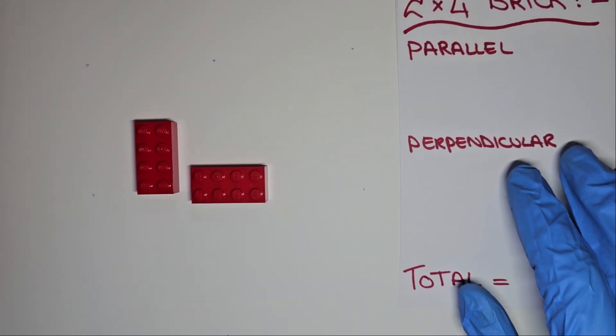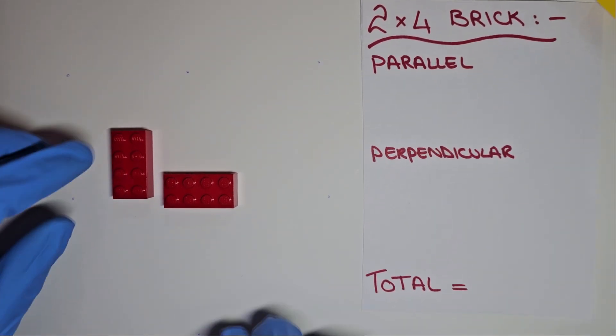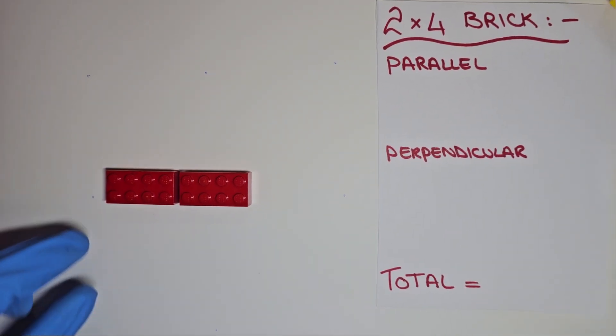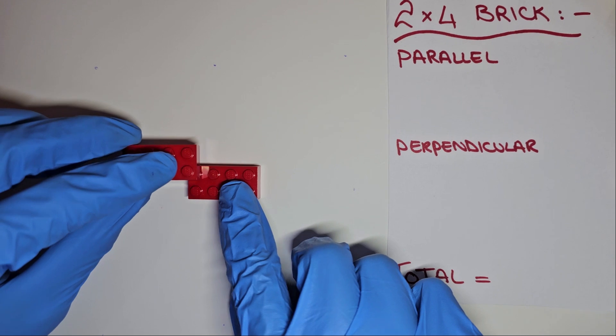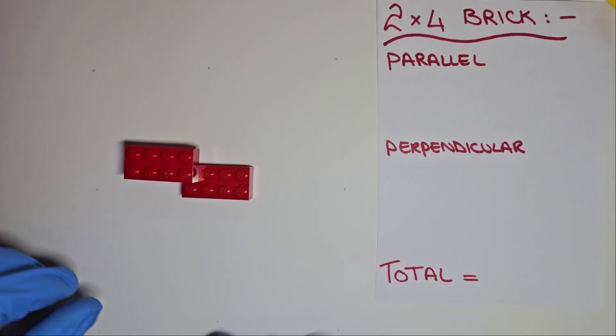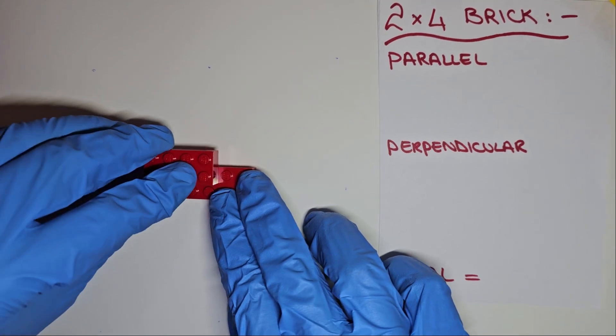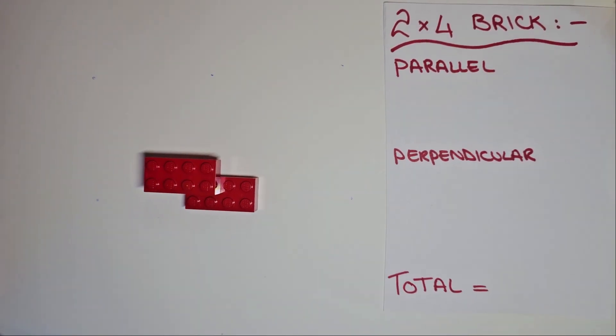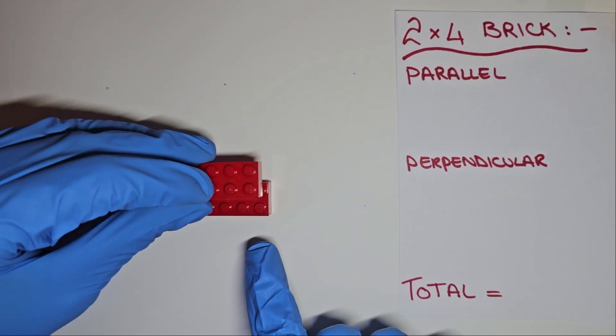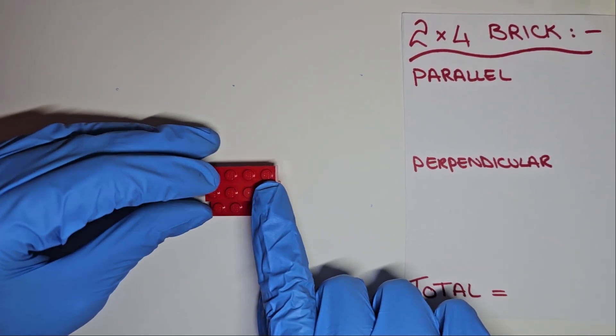Let's grab a tab to keep track of the combinations. To start counting our parallel combinations, arrange the studs on the first row we can connect. Our first connection is this one. Let's count it and store it at the top for reference. For our second one, we can move our top piece one click along to create this one. Another combination. Continuing this on, we can get two more combos until the lengths match. Four so far.